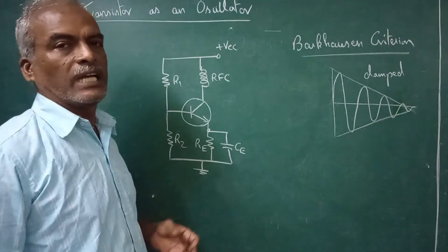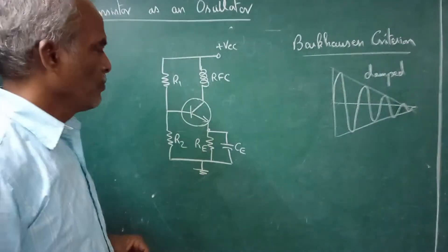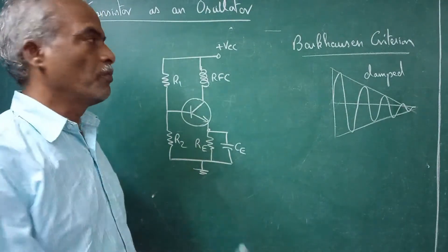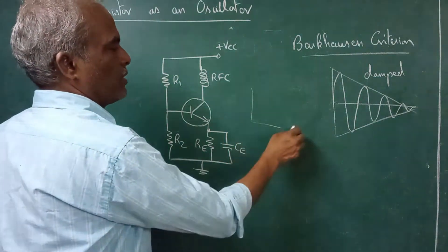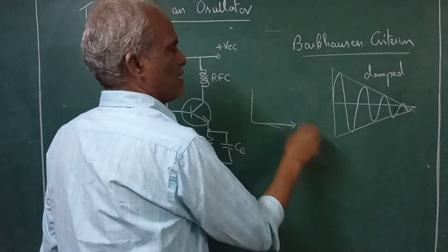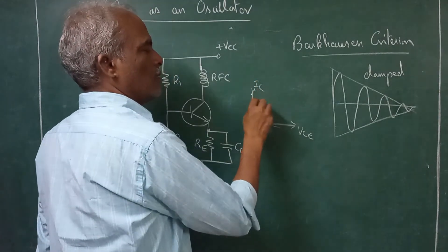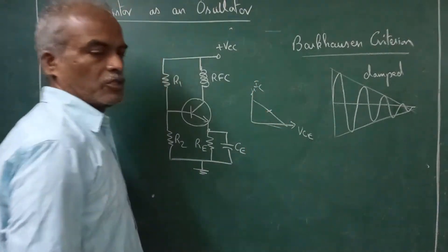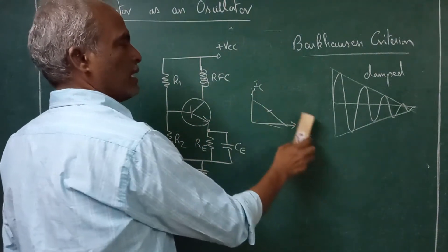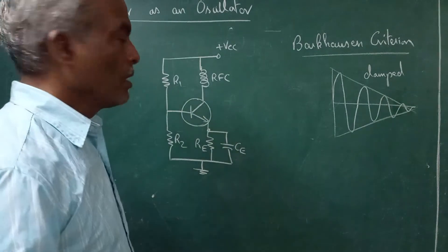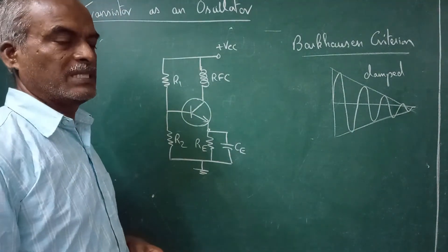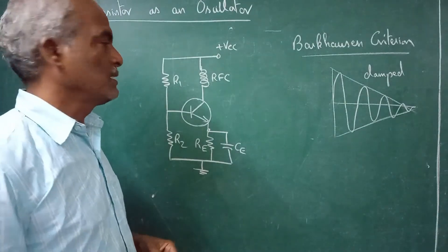This bypass capacitor is attached to improve the gain of the signal, whereas RE is attached to have the stability of the Q point. The Q point is on the load line — if you draw the load line with VCE and IC, the Q point should be stable in the middle of the load line. Therefore, for stability we introduce voltage divider biasing, which has much higher stability than other types of biasing circuits.